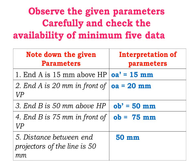Parameter 4. End B is 75 mm in front of VP. Top view of end point B, ob equal to 75 mm.